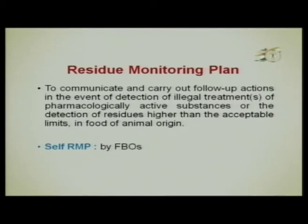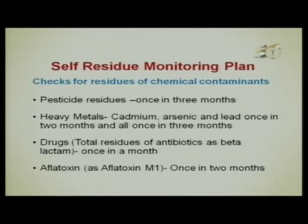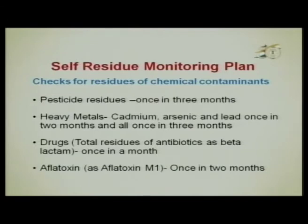In addition to the official RMP, a self-residue monitoring plan (self-RMP) is implemented by the food business operator for milk product establishments. Frequencies defined are: pesticide residue — once in three months; heavy metals (cadmium, arsenic, and lead) — once in two months; total residue of antibiotics such as beta-lactam — once a month; and aflatoxin M1 — once in two months.